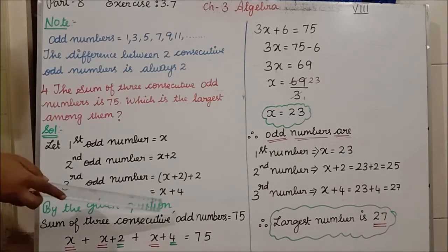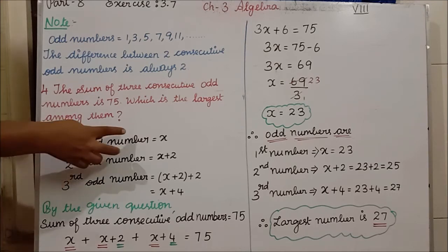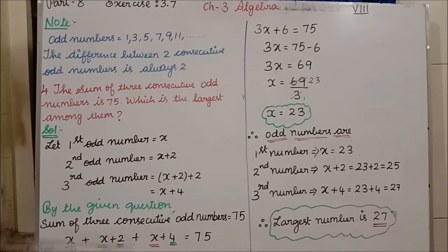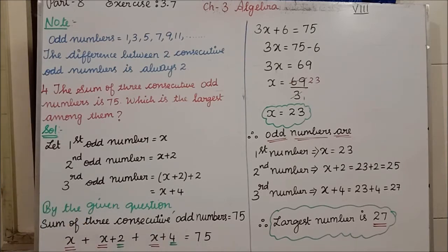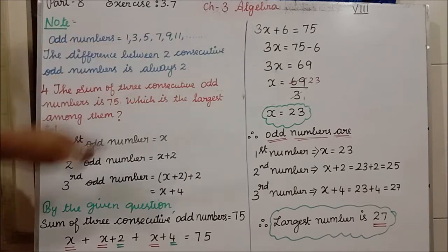By the given condition, the sum of the 3 consecutive odd numbers is 75. So x plus (x plus 2) plus (x plus 4) equals 75. The coefficient of x in each term is 1, so 1x plus 1x plus 1x gives 3x. And 2 plus 4 is 6. Therefore 3x plus 6 equals 75.